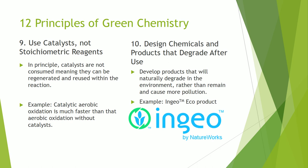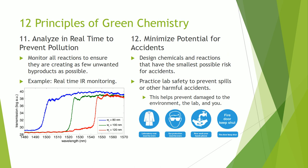Number ten: design chemicals and products that degrade after use. Develop products that will naturally degrade in the environment rather than remain and cause more pollution. One example of this is a biodegradable alternative to plastics called Ingeo, created by the company NatureWorks. Number eleven: analyze in real-time to prevent pollution. Monitor all reactions to ensure that they are creating as few unwanted byproducts as possible. One example of this is real-time IR monitoring, which allows you to monitor the reaction as it goes on rather than just at the end.